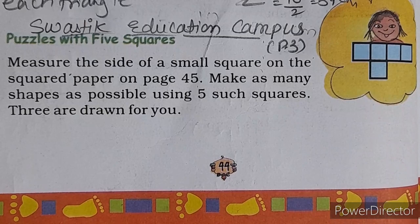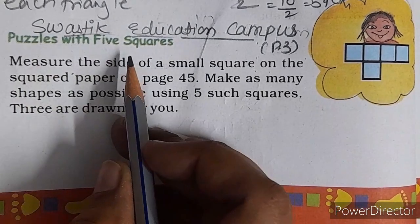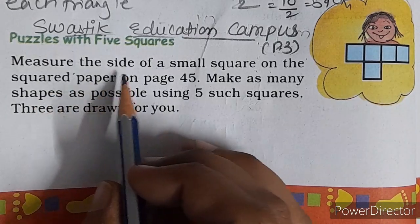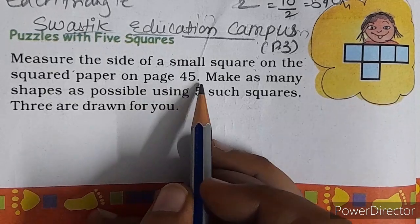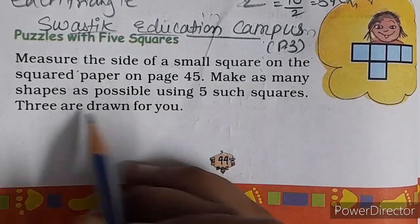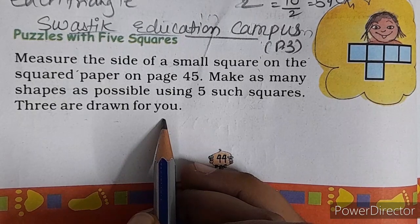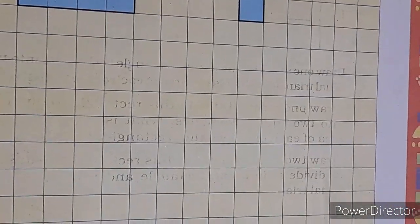We are on page number 44. Measure puzzle with 5 squares. 5 square se hum puzzle khelenge. Measure the side of a small square on the squares paper of page number 45. Make as many shapes as possible using 5 squares drawn as 3 are drawn for you. Here you can see a yellow color space provided.